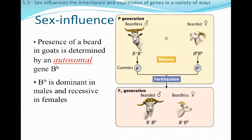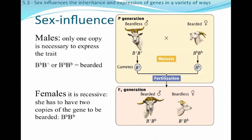This is the part of the chapter that starts blowing people's minds, so just stick with it. Males are only going to need one copy of the allele, and as long as they have that one copy, they are going to express the trait. In this case, B-little-b codes for the beard, and whether it shows up in heterozygous or homozygous form, as long as the individual is male, it's going to have a beard.